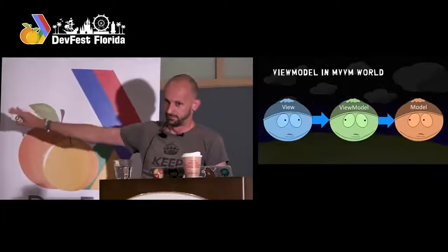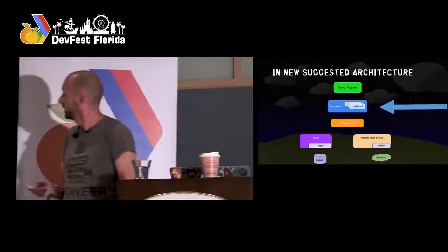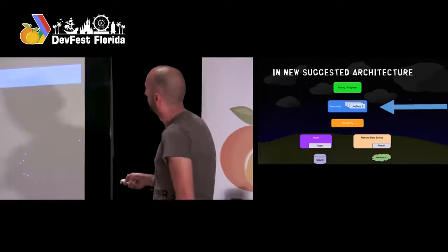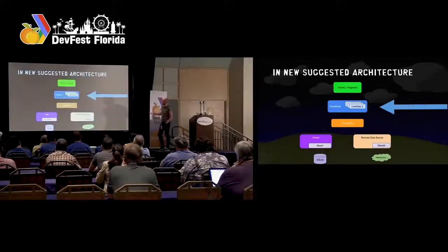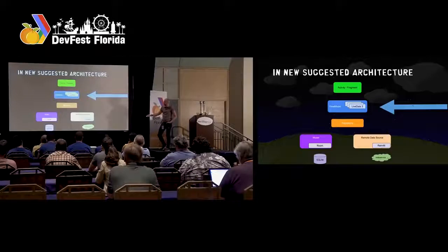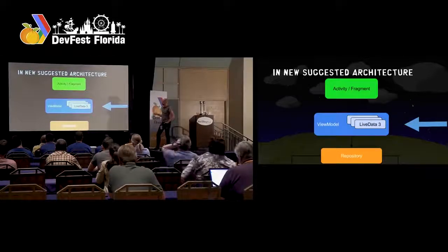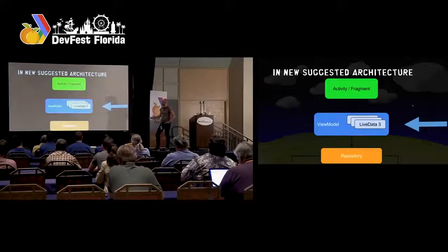This is MVVM as it is — not architecture components. So let's look at what Google says: you have activities and fragments, there's an arrow going to the ViewModel, there's LiveData, and then you go to a repository layer. Then there could be a remote data source like Retrofit for REST calls, and there could be a database on the other side. There's a repository layer in between — if you've ever heard of clean architecture, this is a bit inspired by that. Thinking about MVVM, this is basically your view, there's a ViewModel, and you go to a repository to create your model. This looks very much like MVVM.